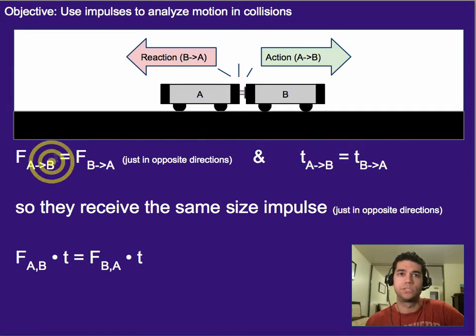So if both those forces are the same size right here, and we know that the time that those forces are applied is the same, so we can't have one of those forces without the other, then what that means is both of those impulses or force times time are going to be the same. So in this case, cart A receives the same size impulse as cart B.